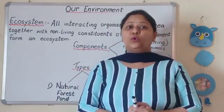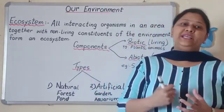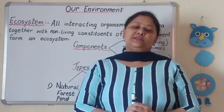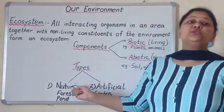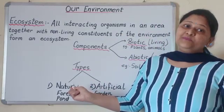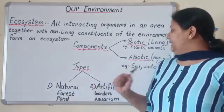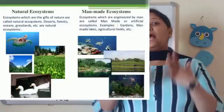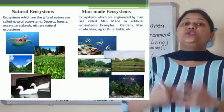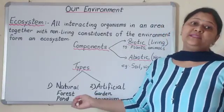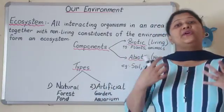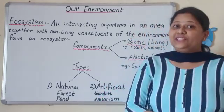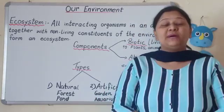For example, you can call it a pond ecosystem. Now we are coming to types of ecosystem. There are two types of ecosystem: the first one is the natural ecosystem and the second one is the artificial ecosystem. Natural means naturally occurring. If we take examples like forest, pond, or rivers, these are natural ecosystems. When we are talking about artificial ecosystem, it's man-made, for example aquarium, garden, etc.